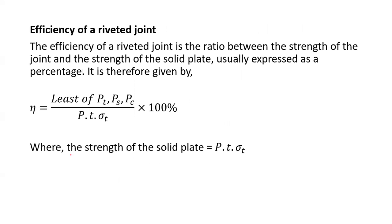We can also talk about the efficiency of a riveted joint. The efficiency is calculated as the least of either the tearing load, the shearing load, or the crushing load, divided by the product of pitch, thickness of the material, and the tearing stress. Express it as a percentage and you are good to go.